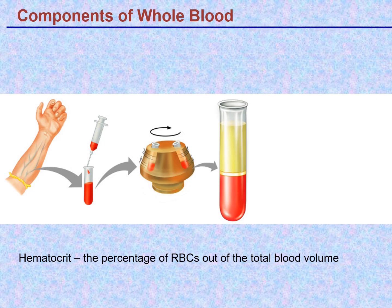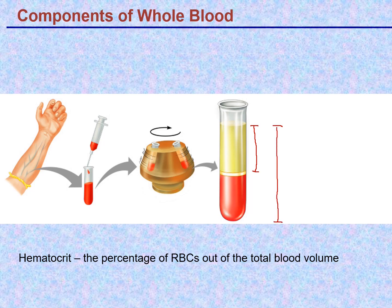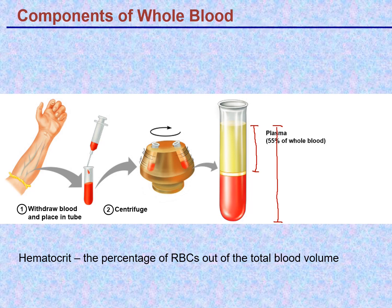One of the very commonly measured values in the blood is the hematocrit, which is the percentage of red cells out of the total blood volume — what percent by volume is red cells versus total blood volume. This is done by taking a blood sample into a tube with an anticoagulant to prevent clotting, spinning it down, and measuring the percentage by volume of plasma versus red cells. It's typically done in a very thin capillary tube, maybe three inches long.